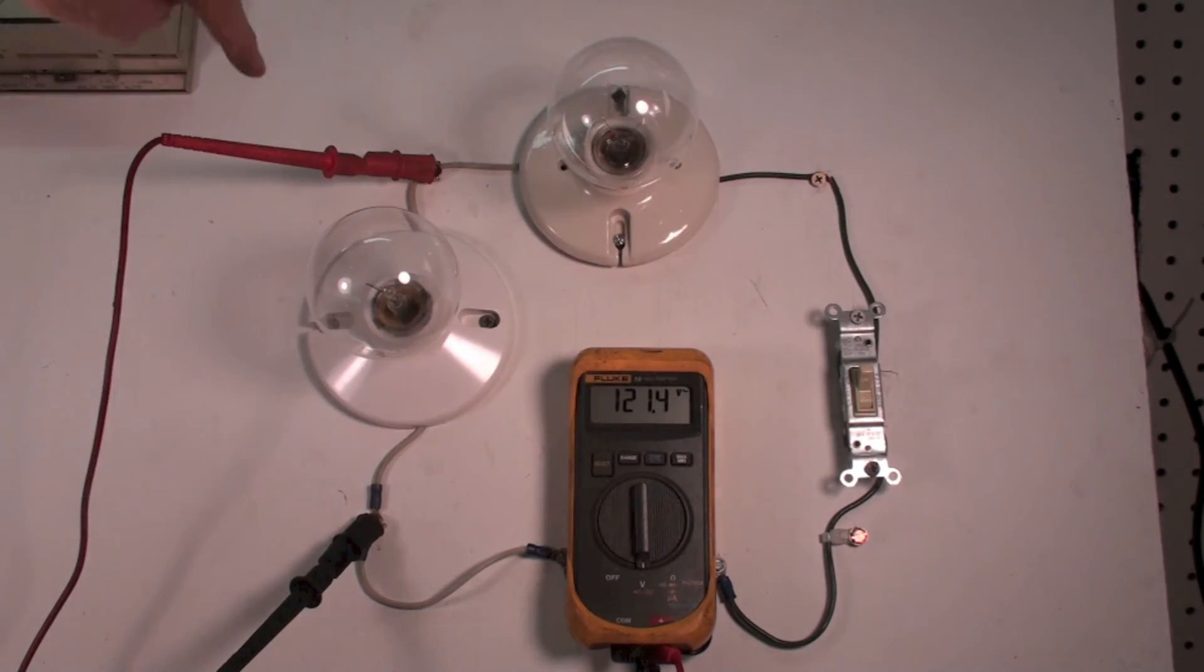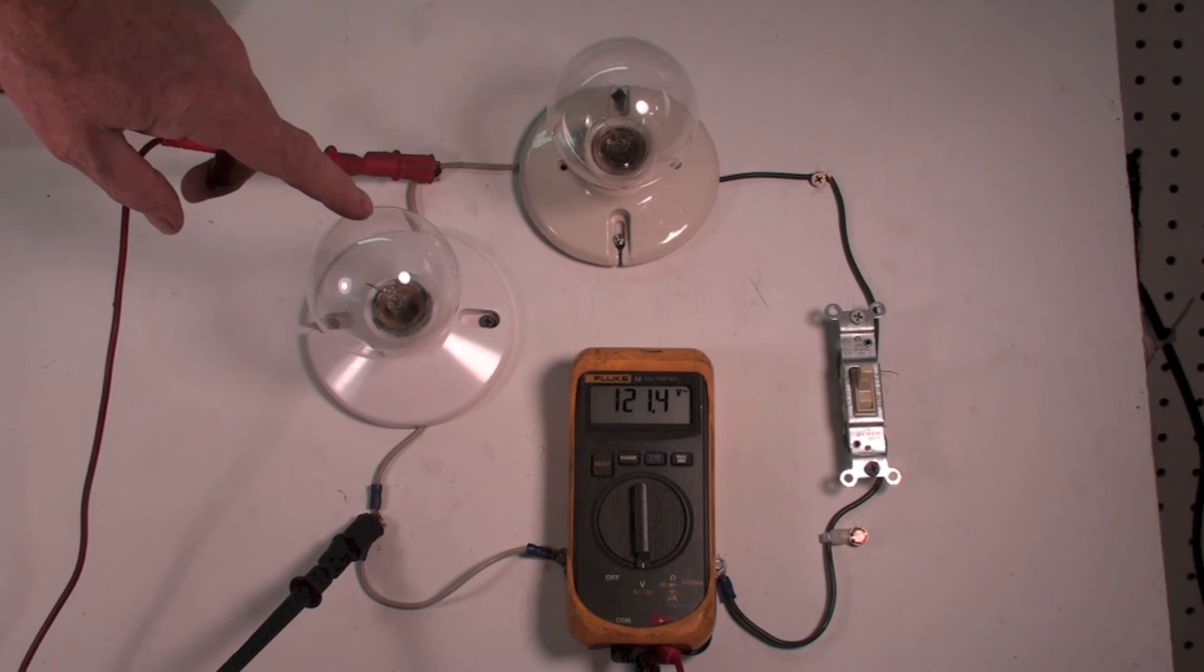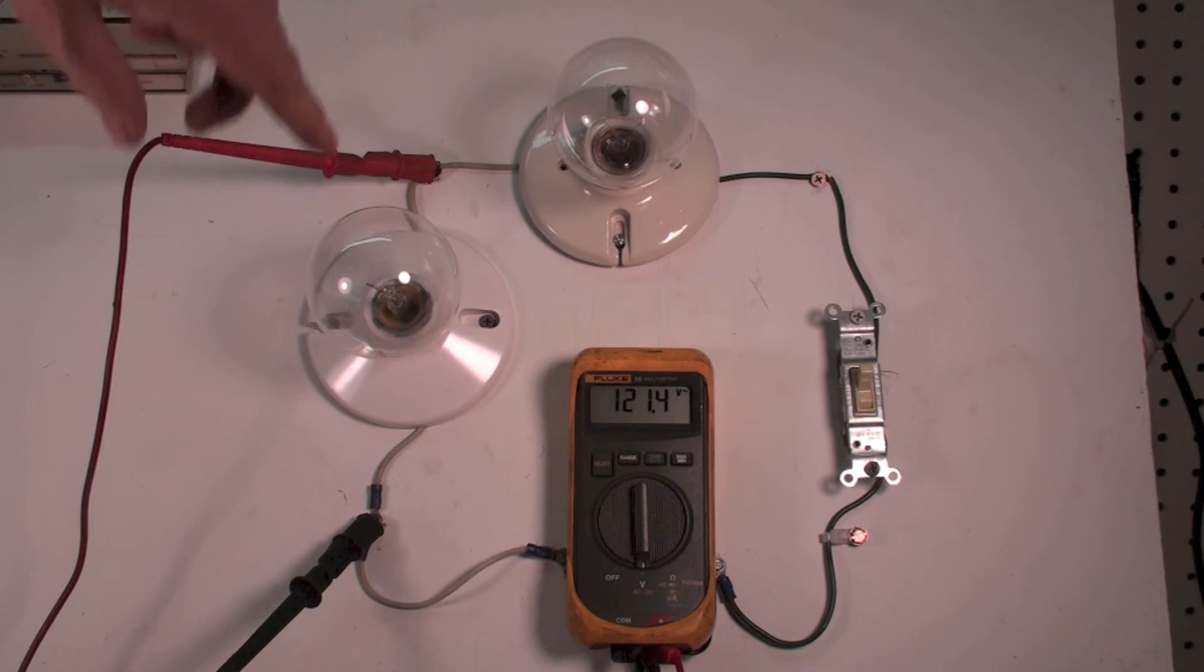I'm reading a complete circuit because I got a circuit that's good all the way through except here. Remember when I did this before, if I read 121 volts across the load and the load wasn't working, then my load had failed.